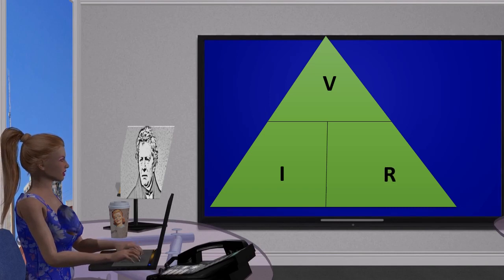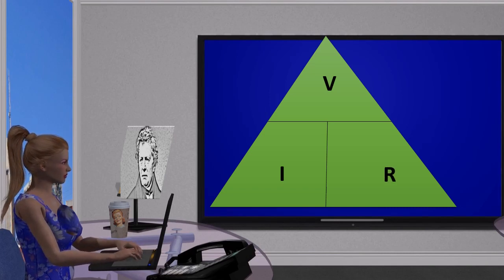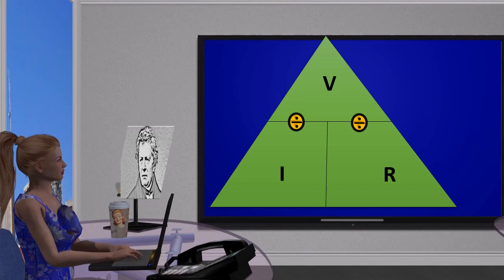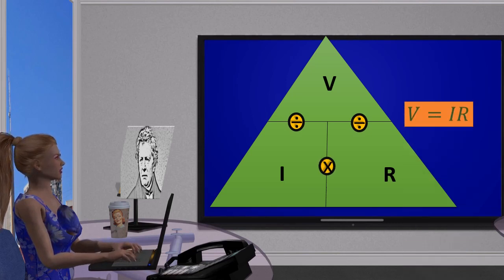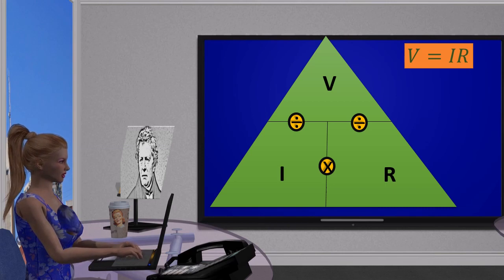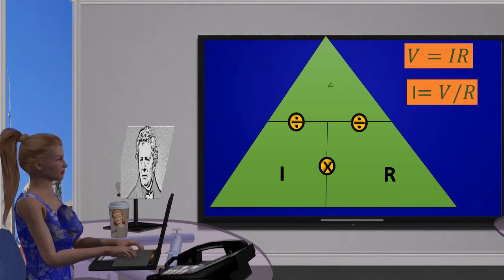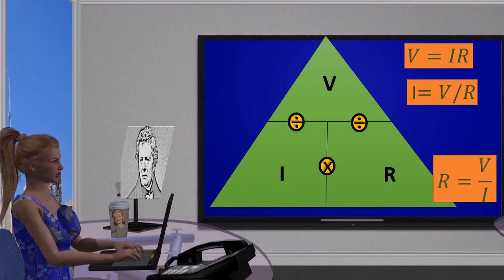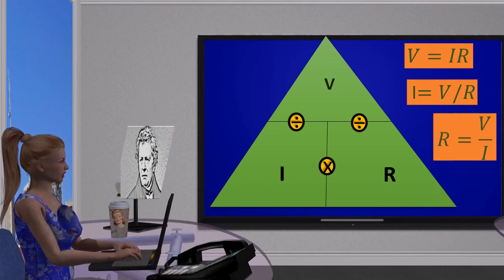The top and bottom parameters are divided and the adjacent parameters are multiplied. If you need to find the voltage, just multiply the values of resistance and current. To find the value of current, divide voltage value by the resistance value. Similarly, to find the resistance, divide the voltage by the current.